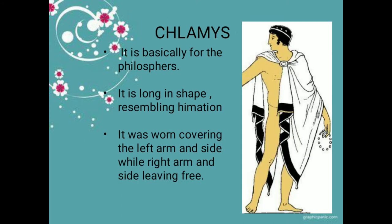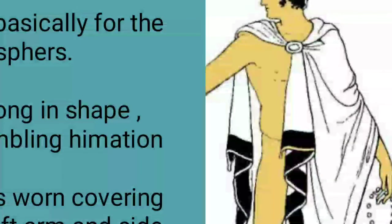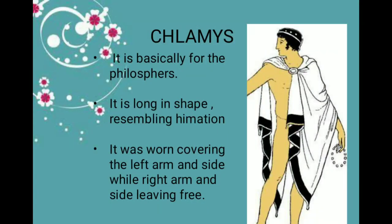Next is the chlamys. The chlamys is a long garment that resembles the himation. When the himation is worn alone — without the chiton — it is called the chlamys. It was worn covering the left arm and side while the right arm and side were left free. The main distinguishing feature of the chlamys is that the left portion is covered while the right portion is free.